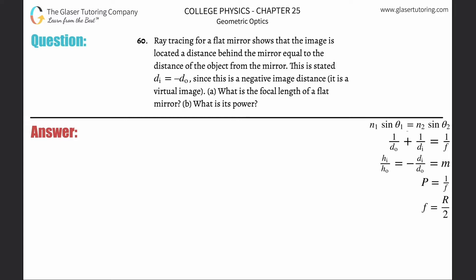Number 60. Ray tracing for a flat mirror shows that the image is located a distance behind the mirror equal to the distance of the object from the mirror. This is stated as DI equals negative DO, since this is a negative image distance. Letter A: What is the focal length of a flat mirror? So let's take a look at how to do it mathematically.